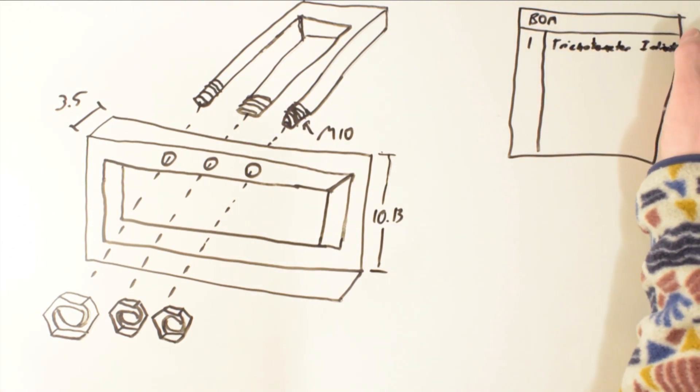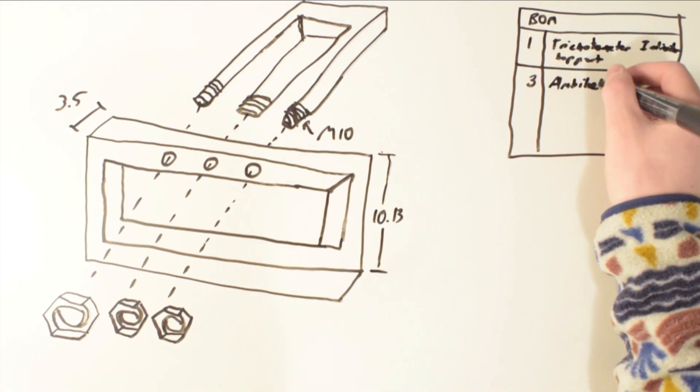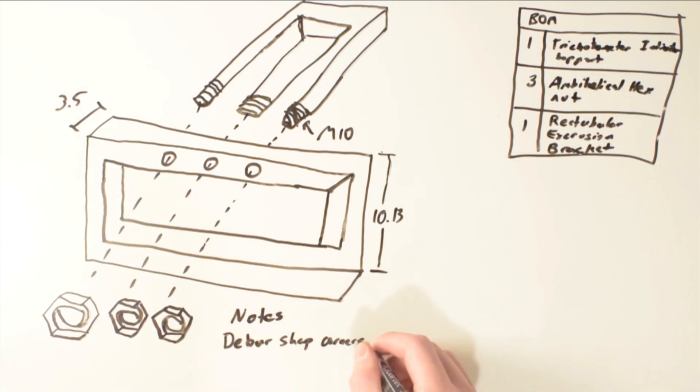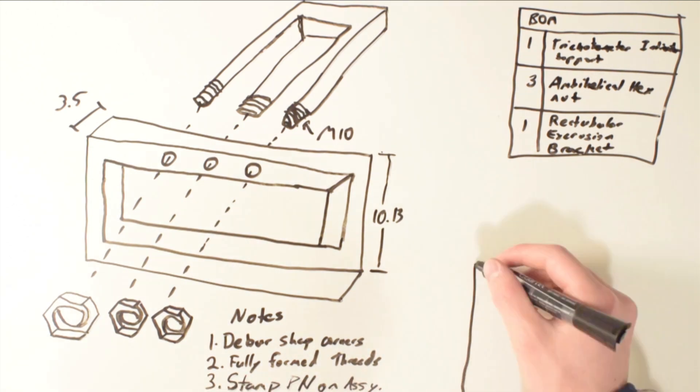The title block will have information such as the name of the part, the part number, who made the drawing, who approved the drawing, the scale of the drawing, number of sheets, the revision number, the units of measurement, and sheet tolerance.